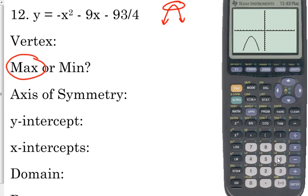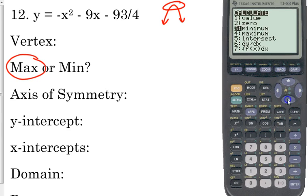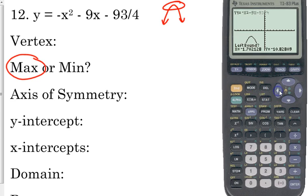The first thing that I start by identifying is what is my vertex. We've already identified that it's a maximum, so let's actually find the coordinates of that maximum. Second trace, maximum is number 4. I don't know where your cursor is, but I've got to move mine over quite a bit to get to the left side of that maximum. Press enter, move to the right side of the maximum, press enter, press enter again. So it gives us negative 4.5, negative 3 for our vertex or for our maximum.